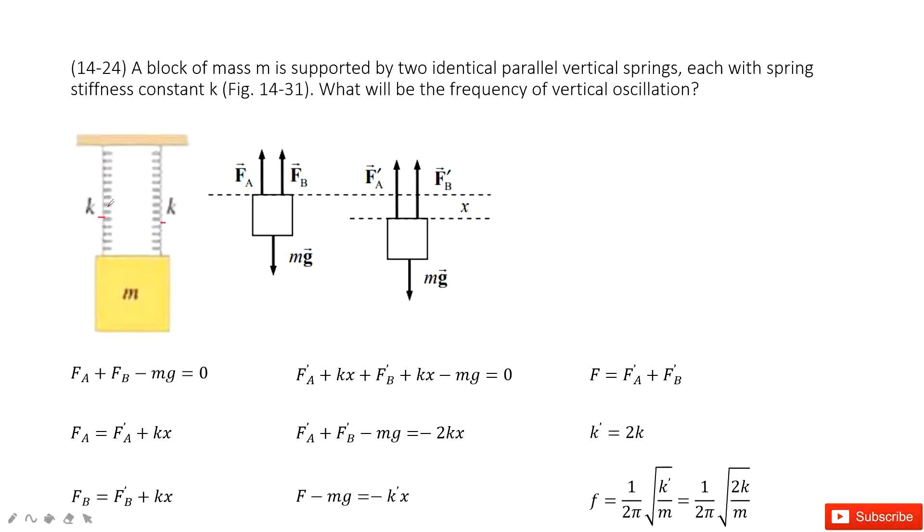How can we solve this problem? When we want to consider frequency, we must connect it with k and M. So we can consider these two springs as one equivalent spring and find the k for this replaced spring, and then we can find the frequency.